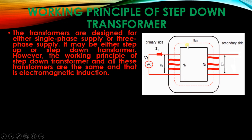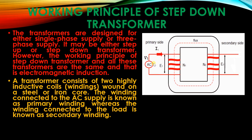This is the AC supply given on the primary side. A transformer consists of two highly inductive coils known as windings, wound on a steel or iron core. The winding connecting to the AC supply is known as the primary winding, whereas the winding connecting to the load is known as the secondary winding.